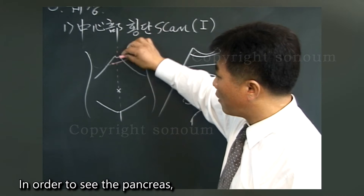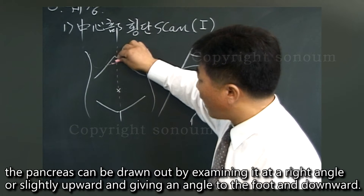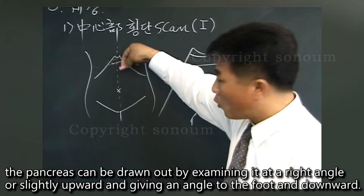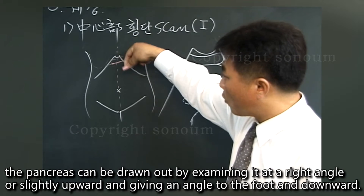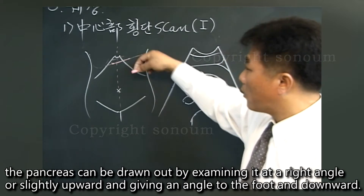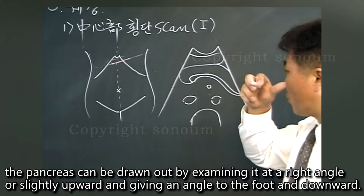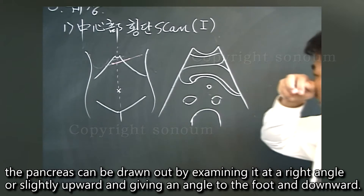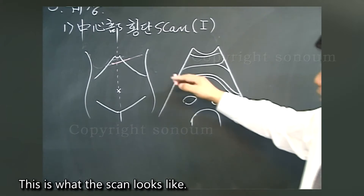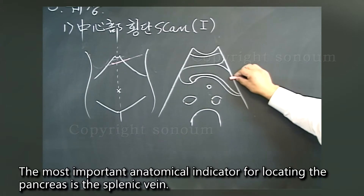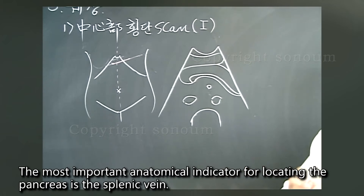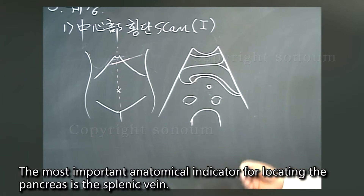In order to see the pancreas, it can be drawn out by examining it at a right angle, or slightly upward, and giving an angle to the foot, downward. This is what the scan looks like. The most important anatomical indicator for locating the pancreas is the splenic vein.